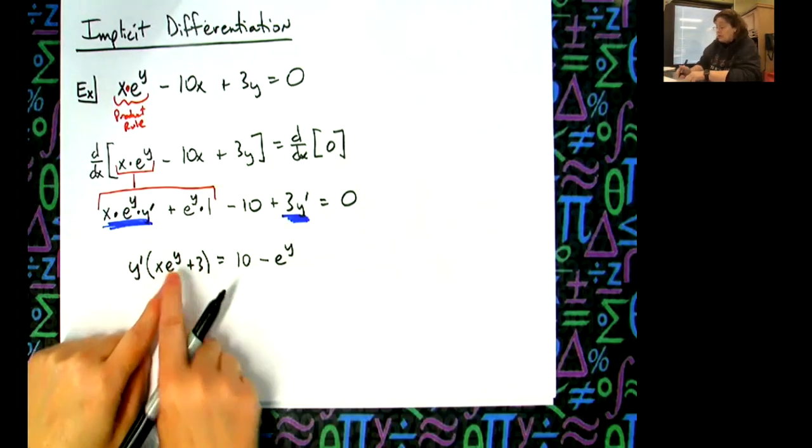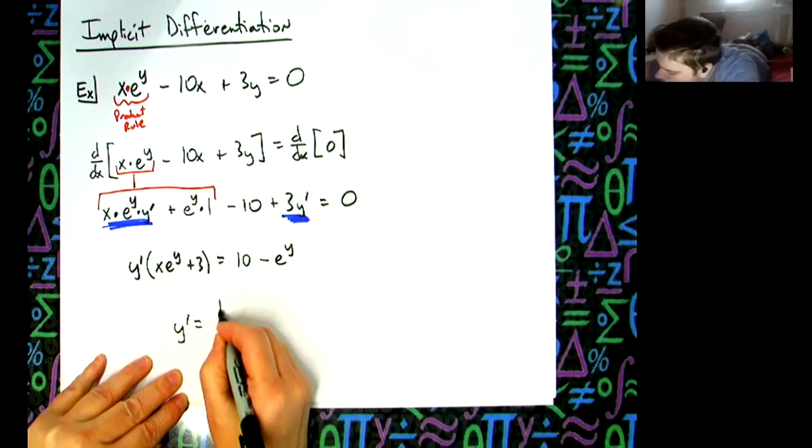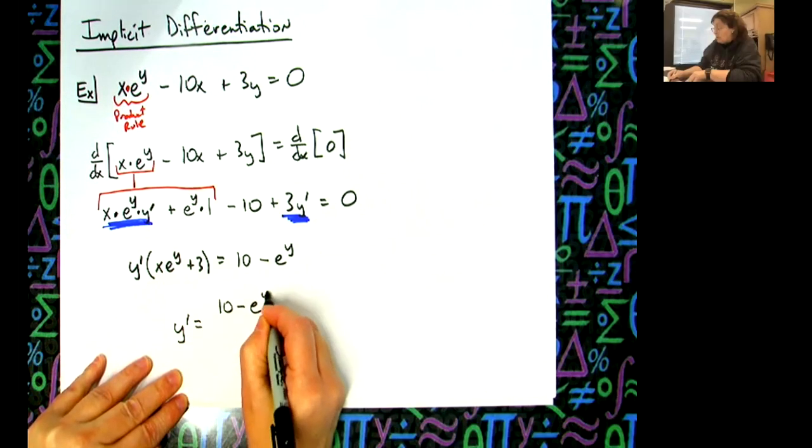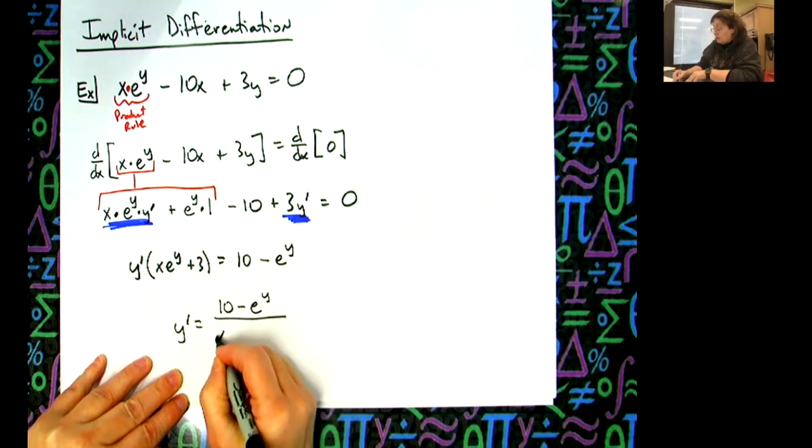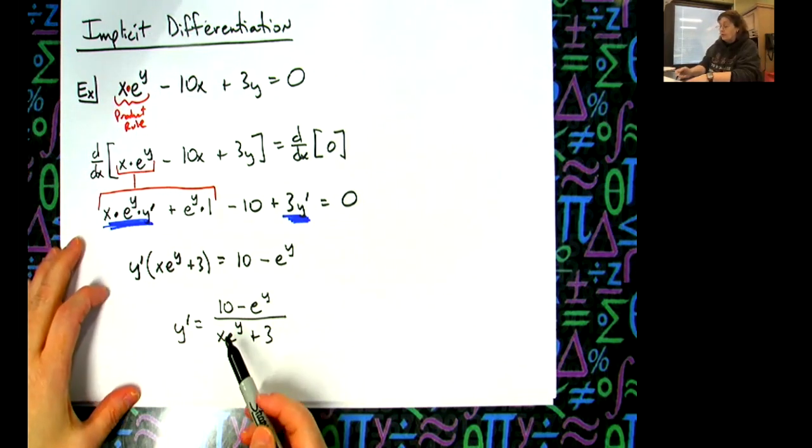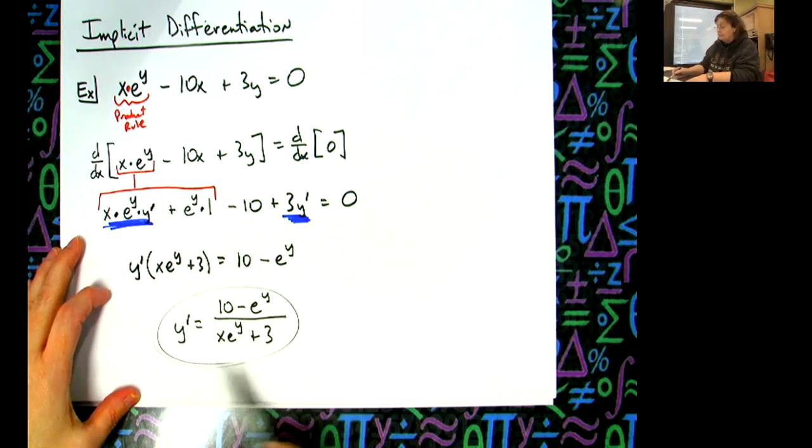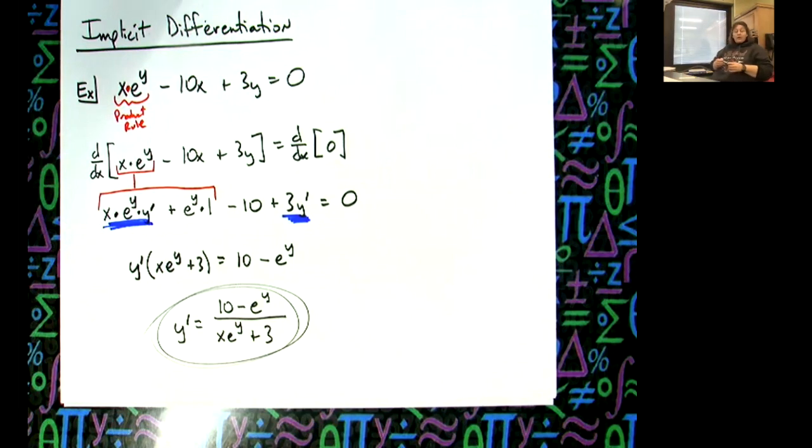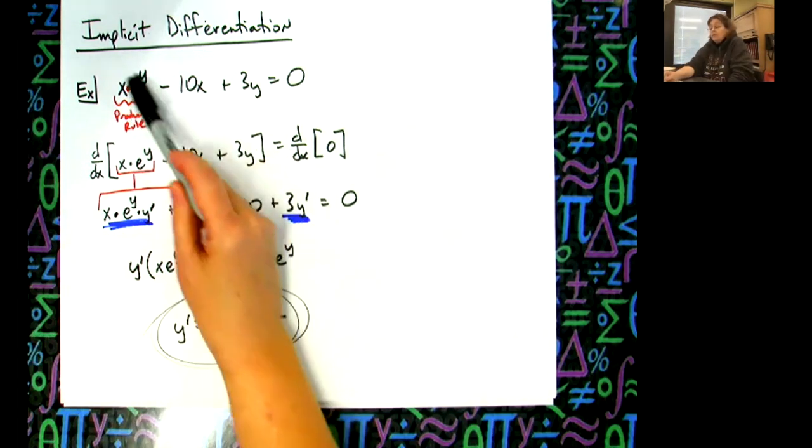Now divide both sides by this, so y prime is 10 minus e to the y all over x e raised to y plus three. So again, we've done implicit differentiation for quite a long time. Now they're just going to throw those e's in there.